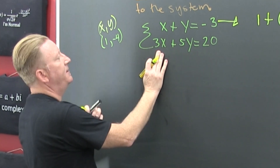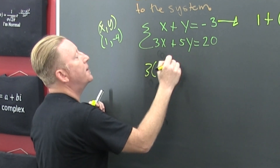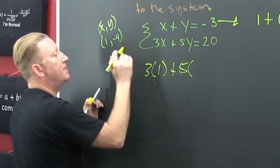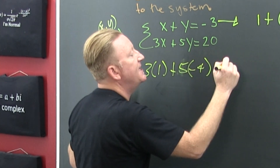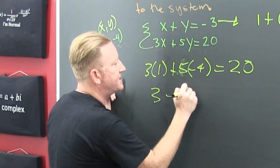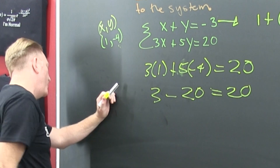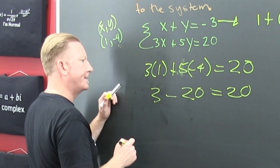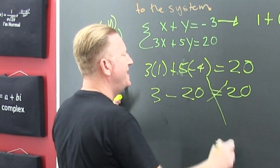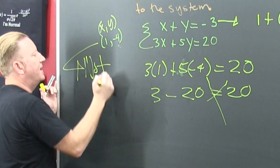Now, I'm going to put that X and that Y and put it in there. So this is 3 times 1 plus 5 times minus 4. Does that equal 20? What's 5 times minus 4? 5 times minus 4 is minus 20. So 3 minus 20 does not equal 20. Those are not the same. So what does that mean? This is not a solution.